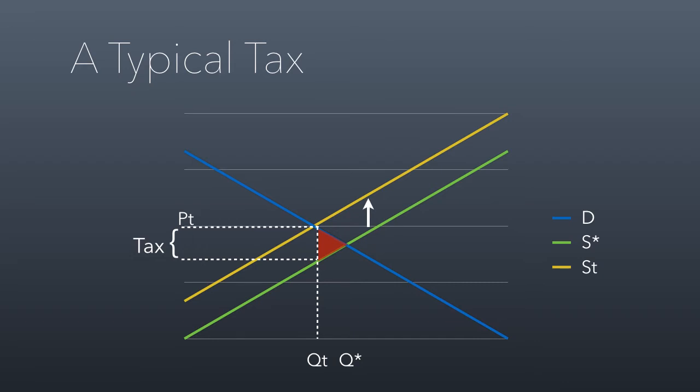On the left-hand side, you see where it says the tax — that difference between the original price-production point and the new price-production point under the tax, that space between PT and the lower line, is the amount of money that the tax generates. The red triangle — hopefully you remember that's called deadweight loss — and that's the amount of producer and consumer surplus that are lost because of the tax. Deadweight loss is bad: it means less happiness for consumers and less profit for suppliers.